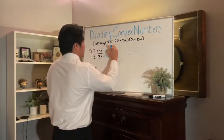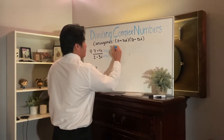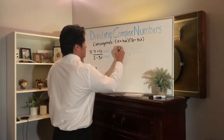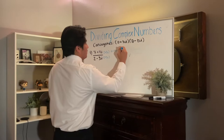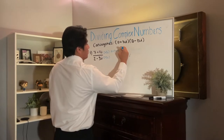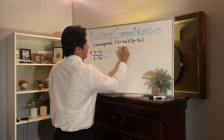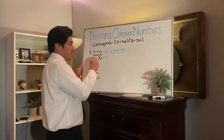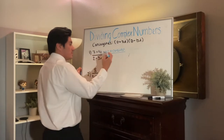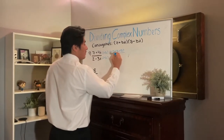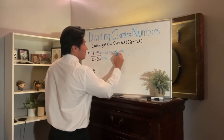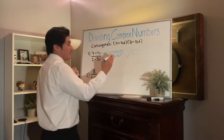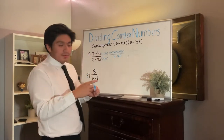That's going to be 14 plus 21i plus 8i plus 12i squared, all over the denominator, which is 4 minus 9i squared. And i squared is going to be equal to negative one.